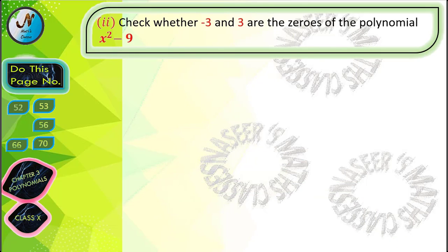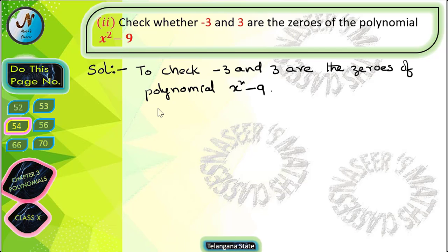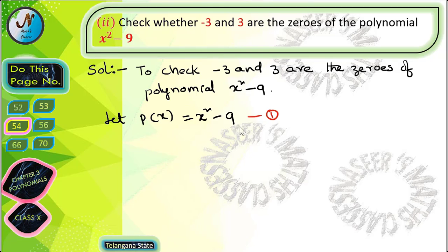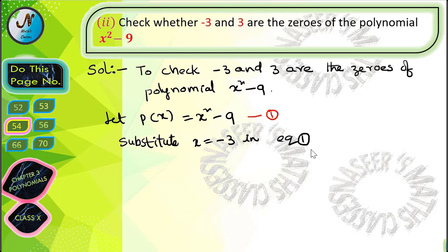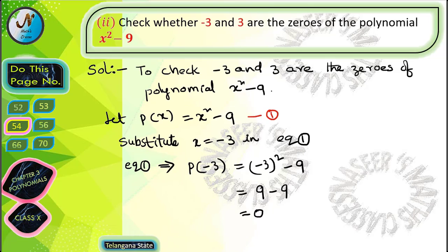Next we solve the second problem from this page. It is given: check whether -3 and 3 are zeros of the polynomial x² - 9. To check this, let p(x) = x² - 9, call this equation 1. Substitute x = -3 in equation 1: p(-3) = (-3)² - 9.